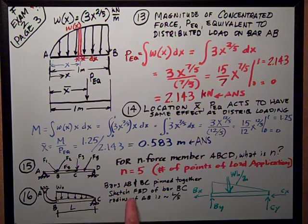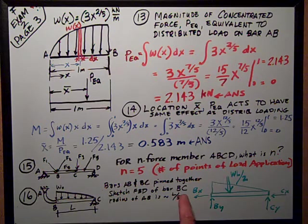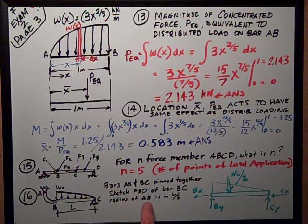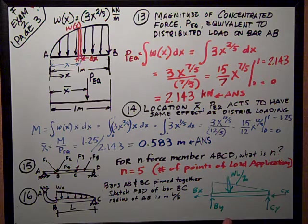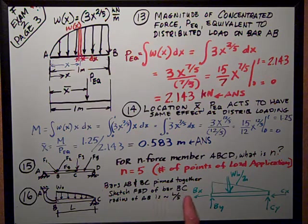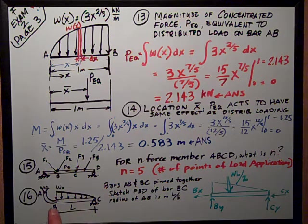I'm asked to sketch a free body diagram of bar BC. And I'm also told that the radius of AB is L over 5, approximately. So, all I want is a free body diagram of bar BC. It has a pin at both ends.